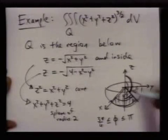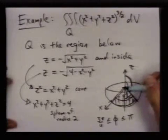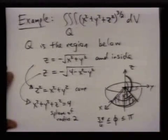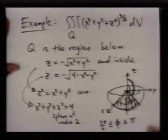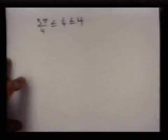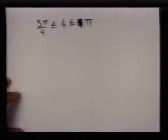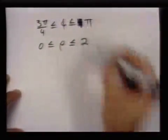So phi goes from three pi over four all the way to pi in this picture. The radius, no matter where we are, once we've chosen an angle of phi, always goes from zero to two since we have a sphere of radius two. Let me write this separately. Phi goes from three pi over four to pi, and rho goes from zero to two.